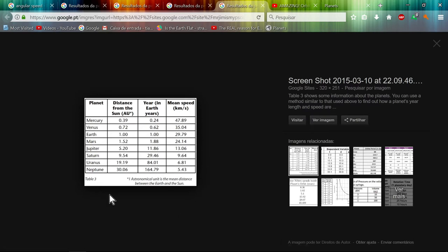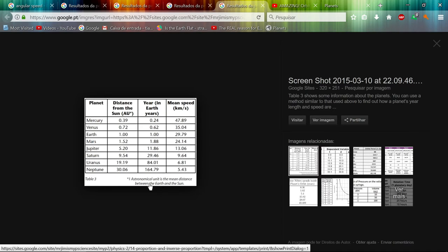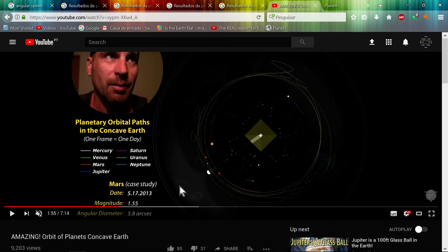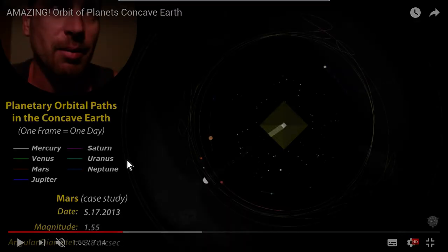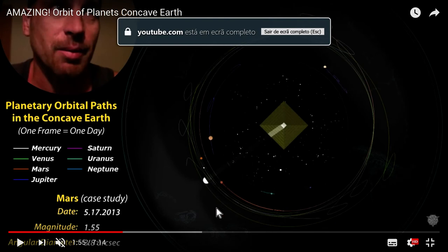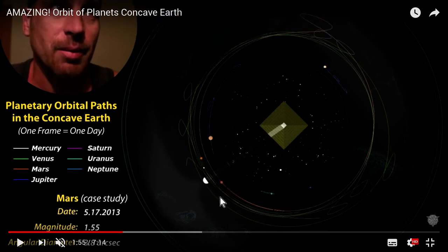In a sphere, because in this example here, as he tried to show here in his model, he shows the planets closest to the Sun here, and the furthest away are closer to the celestial sphere.